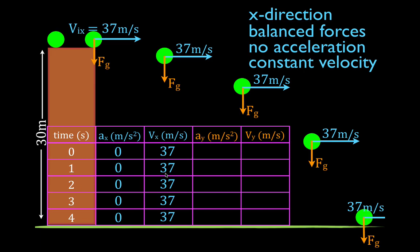So I'm going to put down 37 meters per second. Let's review: balanced forces, no acceleration, constant velocity. No acceleration — 0. Initial velocity, and because there's no acceleration, the velocity remains 37 meters per second. Remember Newton's laws of motion: objects in motion tend to stay in motion, objects at rest tend to stay at rest unless acted upon by an unbalanced force. There's no unbalanced force, so therefore this object is going to stay in motion.